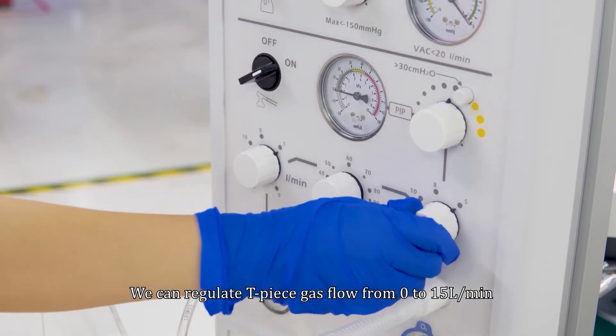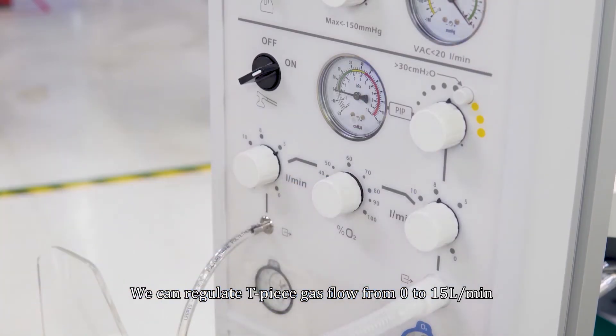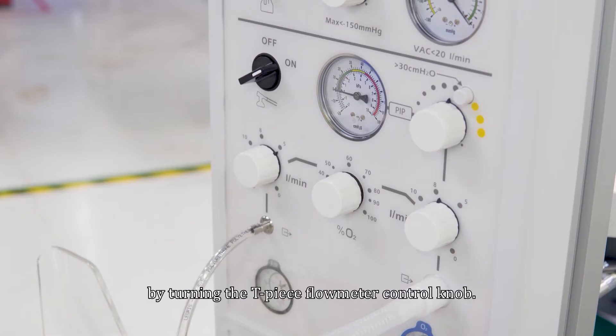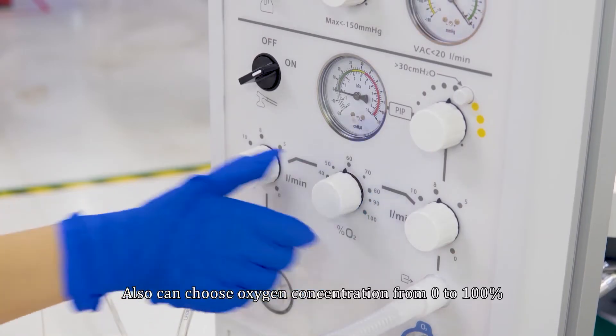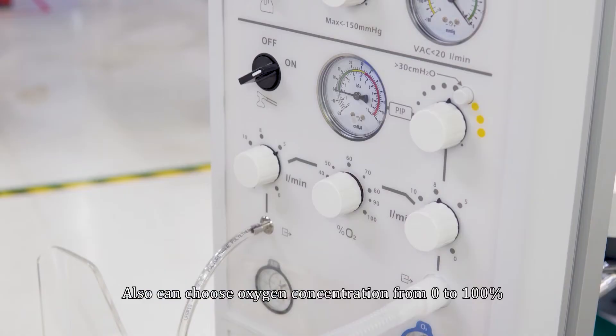We can regulate T-piece gas flow from 0 to 15 liters per minute by turning the T-piece flow meter control knob. Also, can choose oxygen concentration from 0 to 100 percent by rotating the blender control knob.